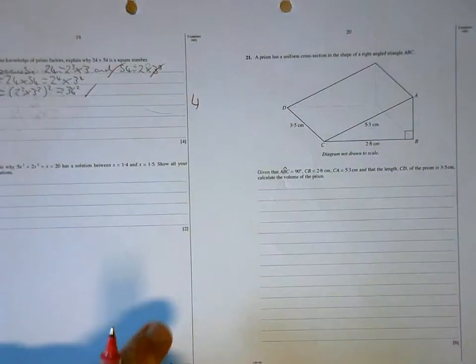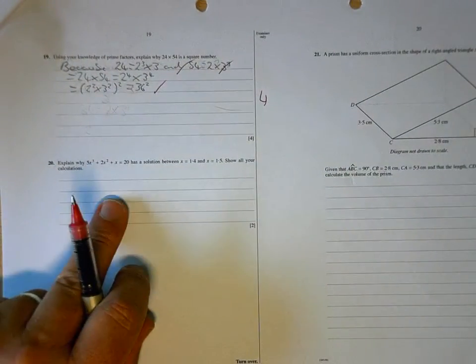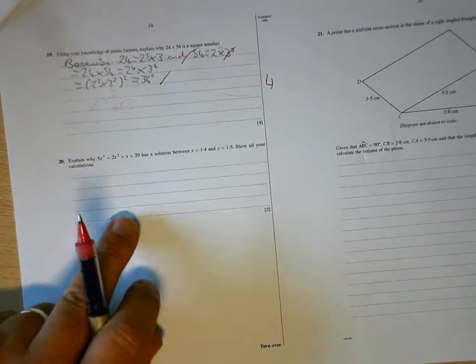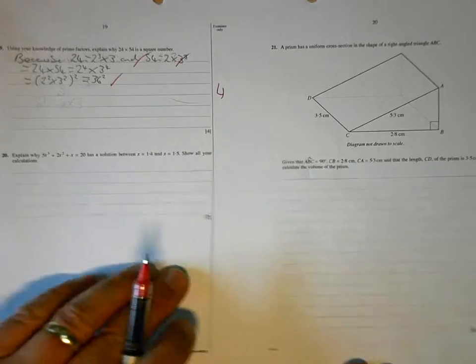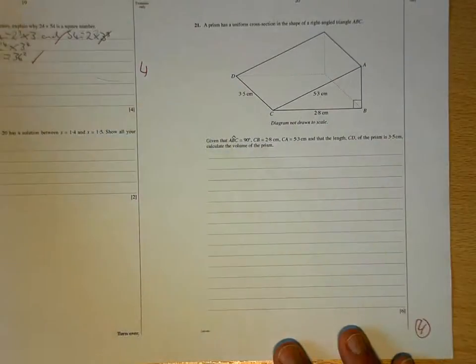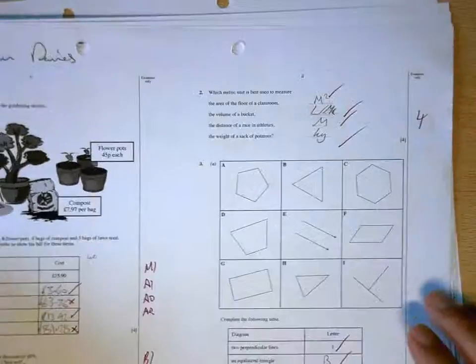And then have a look how I do the last two. This is called trial and improvement. And, again, you should be able to get on with that yourself. But question 21 is quite involved. It requires Pythagoras, areas of triangles, and volumes. Okay, total for the page.